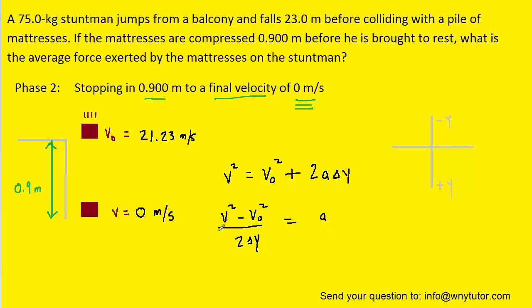We can now plug in all the known values for phase 2 of the problem. Remember the final velocity was 0 meters per second. And when we plug in the known values and compute the acceleration, we get approximately negative 250.44 meters per second squared. That is the acceleration. We'll notice that the acceleration is negative. It's pointing in the upward direction using our sign convention.